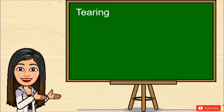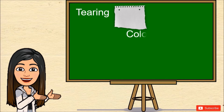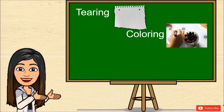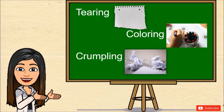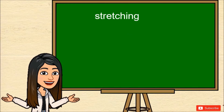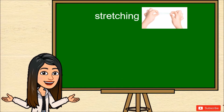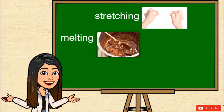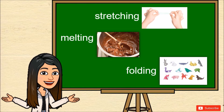Now, there are also other ways by which we could still change the appearance of solid materials, like that of the paper. Tearing, coloring, and crumpling are examples. Likewise, stretching could also give change, such as stretching a rubber band or melting your chocolate when baking. And folding could also bring change to solid materials.